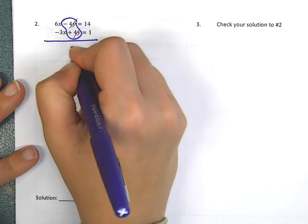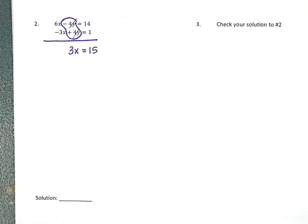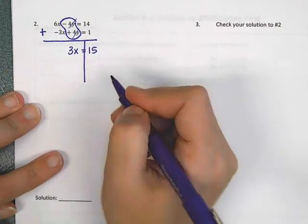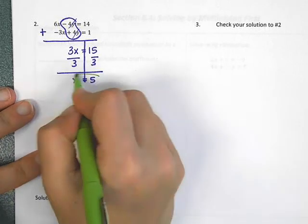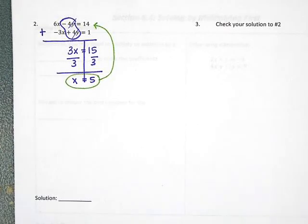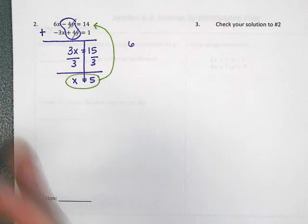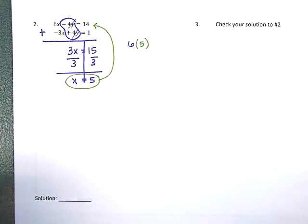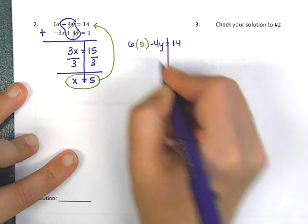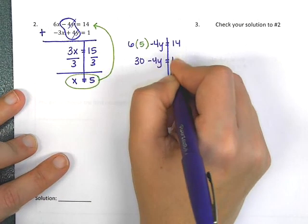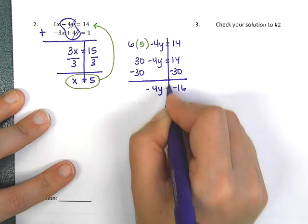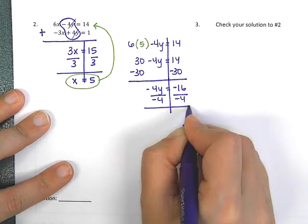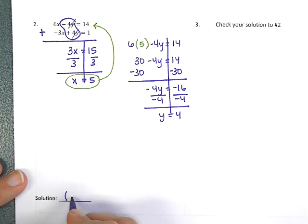The negative 4y and positive 4y cancel, which means I get 3x equals 15 — where that 3x comes from is 6x plus negative 3x. Dividing both sides by 3 gives x equals 5. Now we take that number and plug it into the original problem to find y. So 6 times 5 minus 4y equals 14. That gives 30 minus 4y equals 14. Subtract 30 on both sides: negative 4y equals negative 16. Divide by negative 4: y equals 4. My final answer is (5, 4).